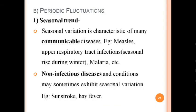Coming to periodic fluctuations — seasonal variation is a characteristic of many communicable diseases. For example, measles rises during winter and spring, malaria during the rainy season. Some non-infectious conditions also exhibit seasonal variations, such as hay fever and sunstroke. There can also be a cyclical trend, where some diseases occur in cycles spread over days, weeks, months, or years. For example, influenza pandemics occur at intervals of 7 to 10 years due to antigenic variation.